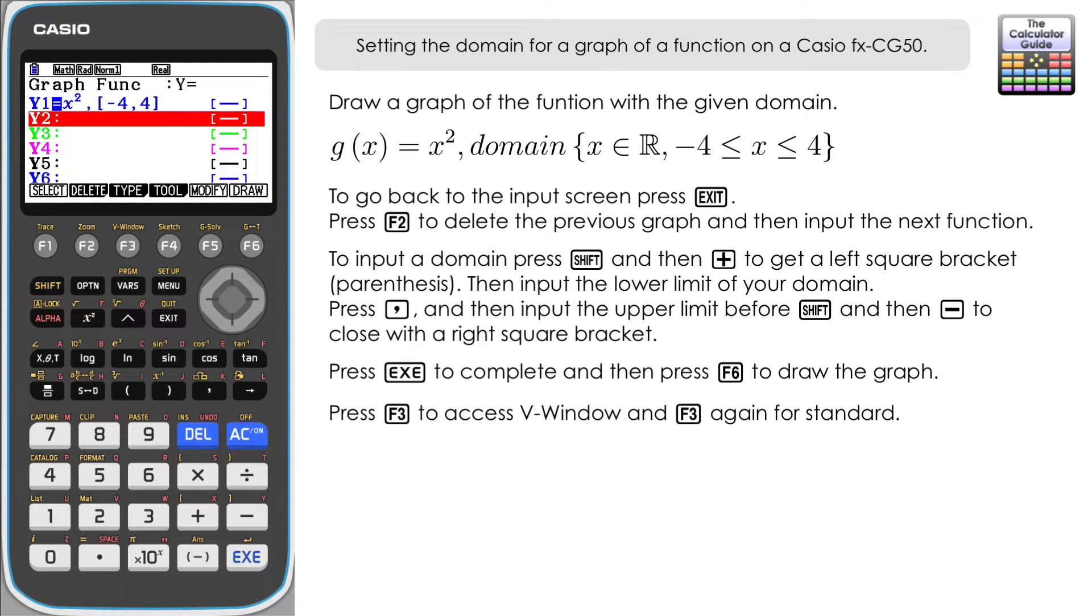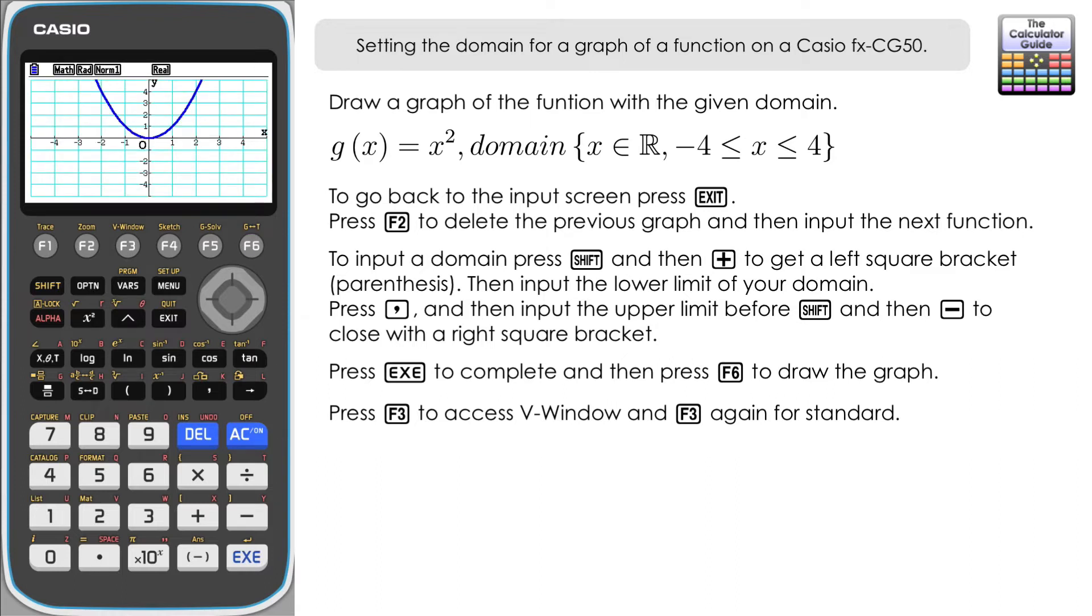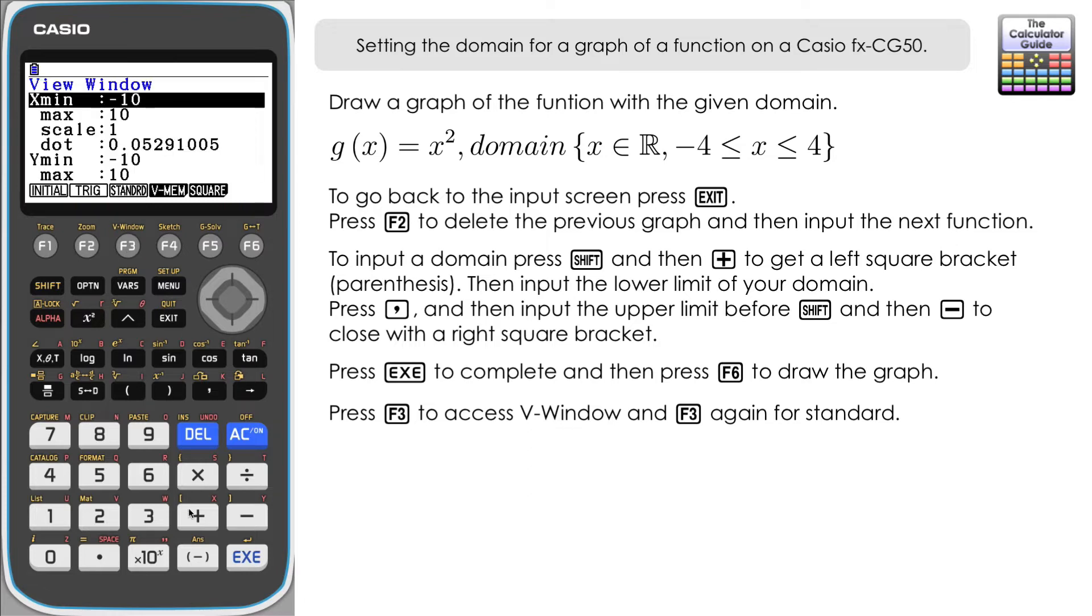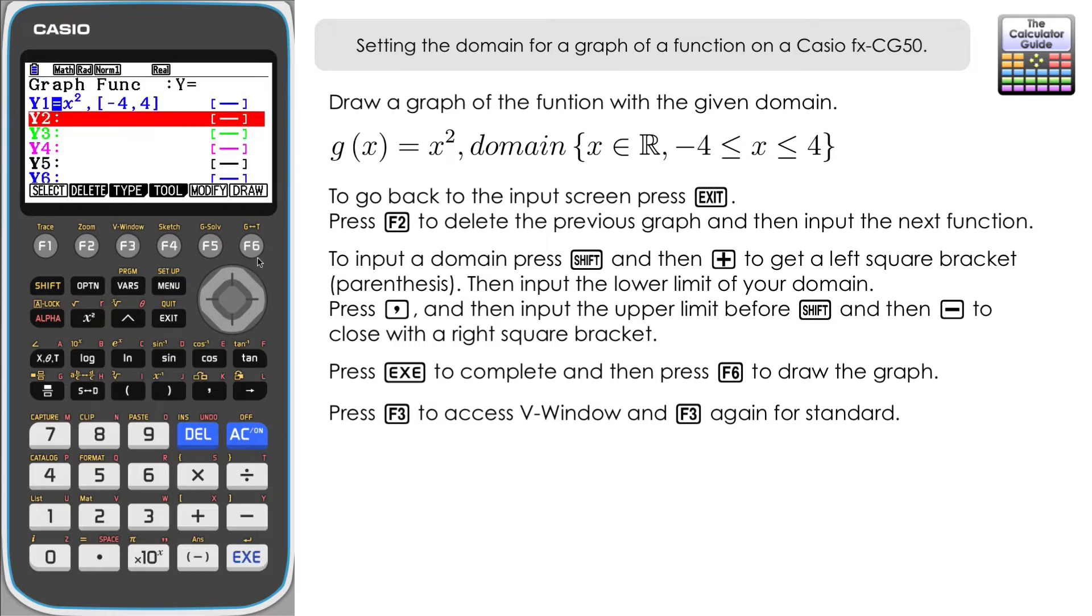and then 4 and then we want to close the square brackets. Execute and then F6 for draw and we can see here that we've got our x squared drawn. I'm just going to alter the display again.